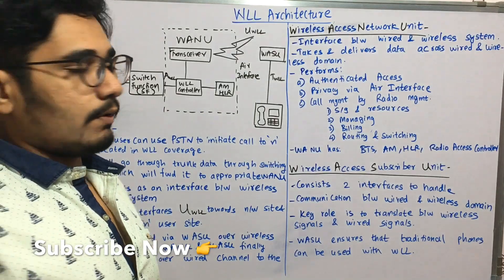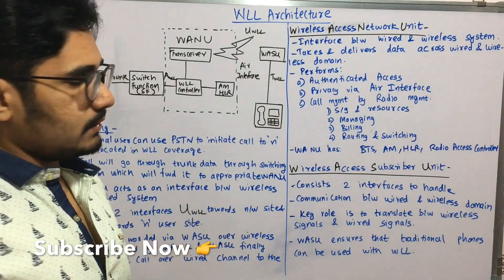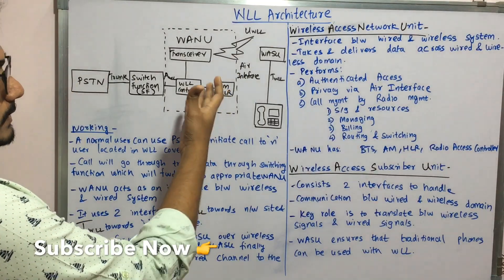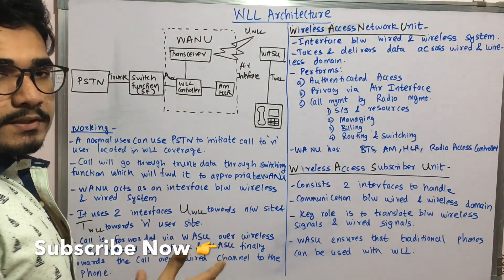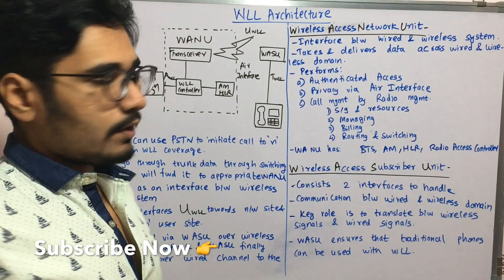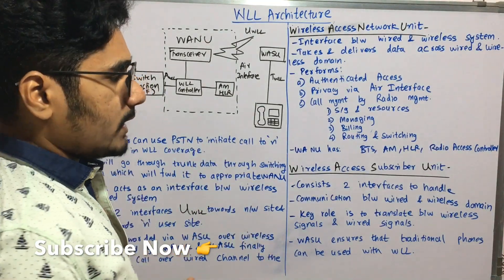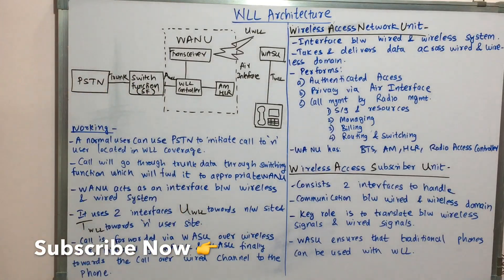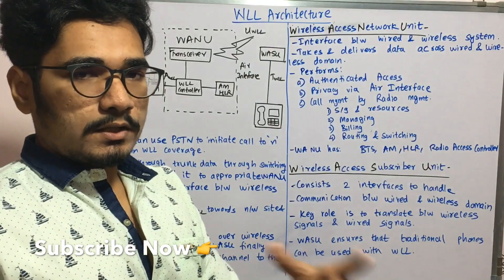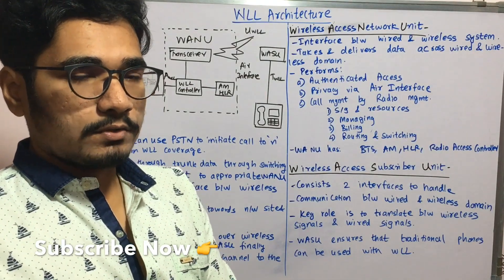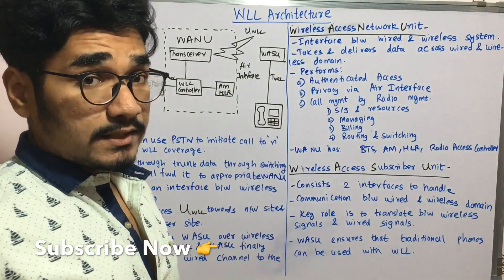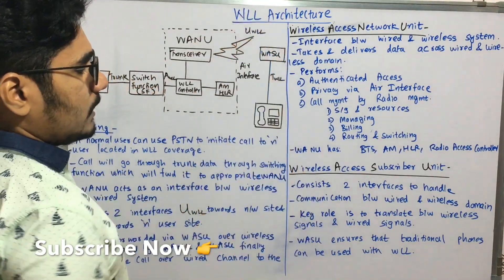VANU has a few components. The transceiver is basically your BTS from the GSM system, that is Base Transceiver Station. Then you have the AM — Access Manager — which is used for security purposes. Then you have HLR, the Home Location Register. Then there is a Radio Access Controller, which is an optional component that controls all the functions or calls coming through.